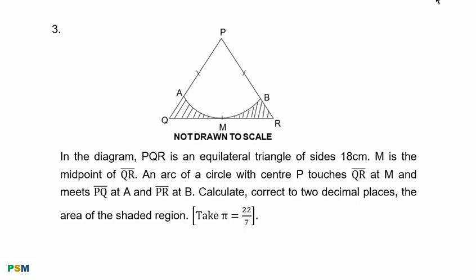Question 3. In the diagram, PQR is an equilateral triangle of sides 18 cm. M is the midpoint of QR. An arc of a circle with center P touches QR at M and meets PQ at A and PR at B. Calculate, correct to two decimal places, the area of the shaded region. Take π equal to 22 over 7.